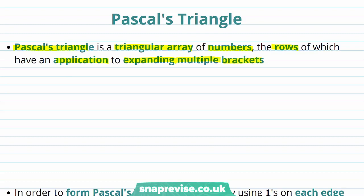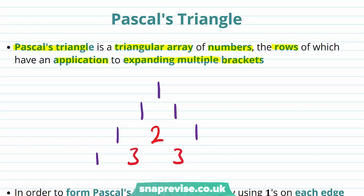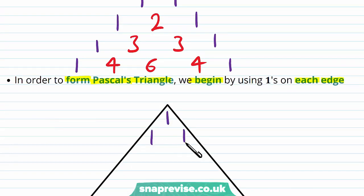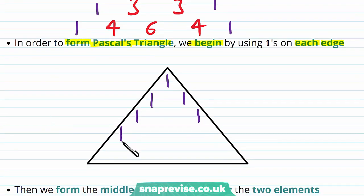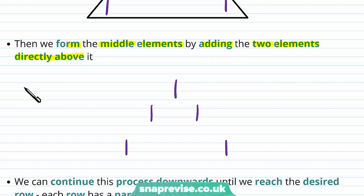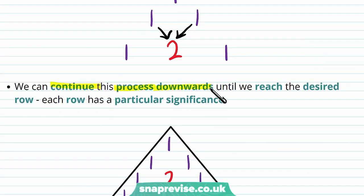Pascal's triangle looks like the following. We have a 1 at the top, followed by two 1s directly underneath it to the sides, and then a 1, 2, 1, then a 1, 3, 3, 1, and then a 1, 4, 6, 4, 1. In order to form Pascal's triangle, we begin by using 1s on each edge. We start with a 1 at the top, followed by two 1s underneath, and continue placing 1s along both edges. Then we form the middle elements by adding the two elements directly above. So with the first three rows, to get the middle element we add 1 and 1 together to get 2. We can continue this process downwards until we reach the desired row.